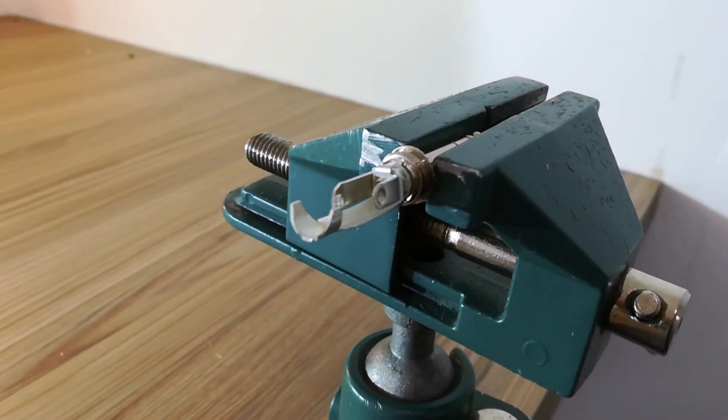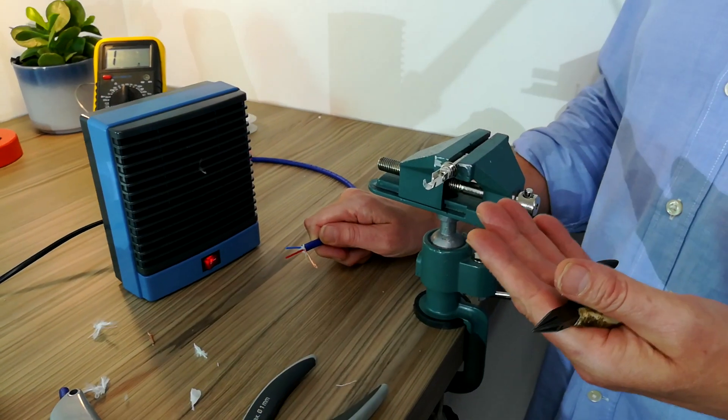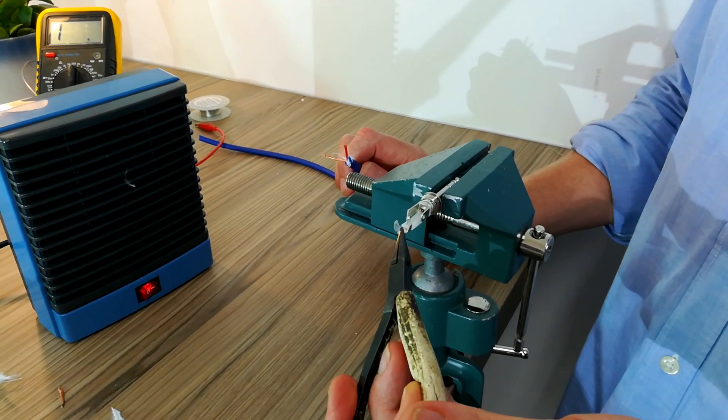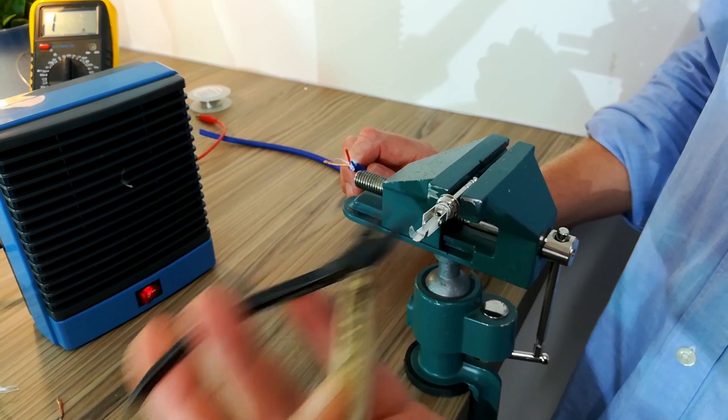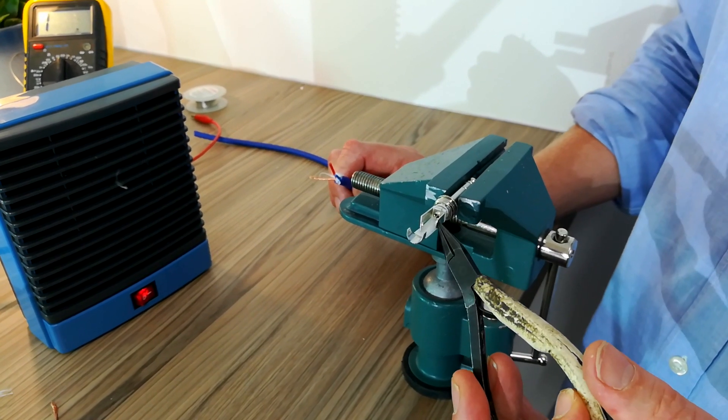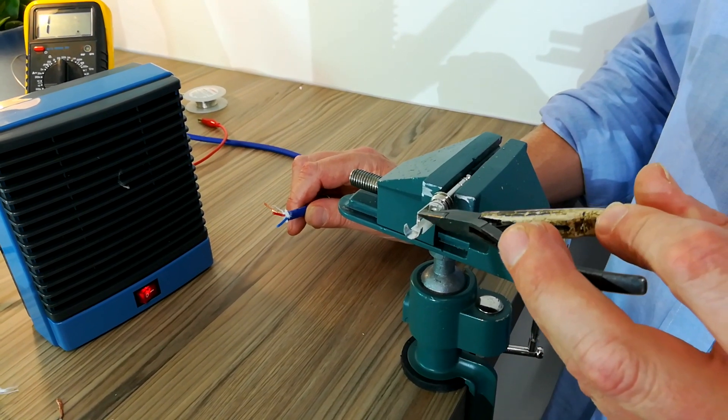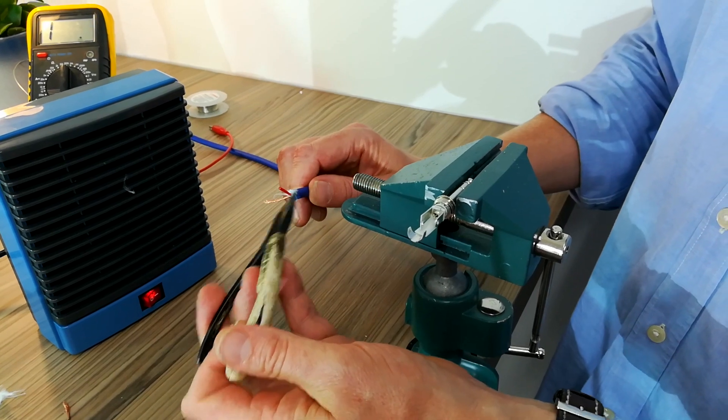So the connector's ready for soldering up, but you might be thinking which one is which connector-wise. Just to go through it, this is your earth. Now these clamp up around the cable, but you do that at the end. This one is your right channel, so we wire that to the red. And this one here is your left channel, so you wire that to the blue.